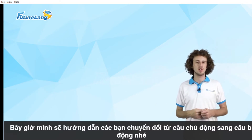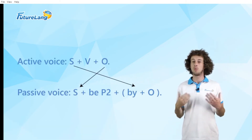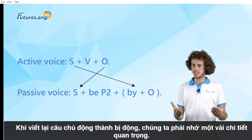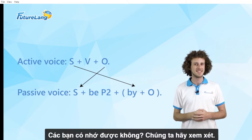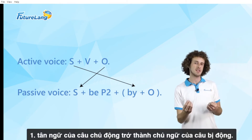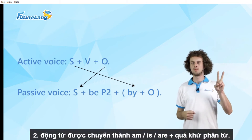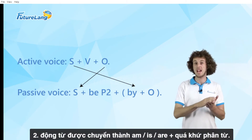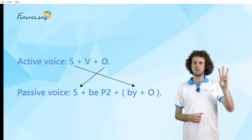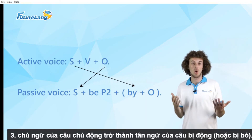And now, let's look at how to convert from active voice to passive voice. When rewriting active sentences into passive, we must remember a few important details. One: the object of the active sentence becomes the subject of the passive sentence. Two: the verb is changed to am, is, or are, plus past participle. And three: the subject of the active sentence becomes the object of the passive voice, or is dropped.